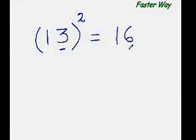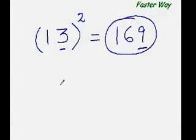Now for the last digit, what you do is find the square of the units digit. So what is the square of 3? It is 9, so the answer is 169.